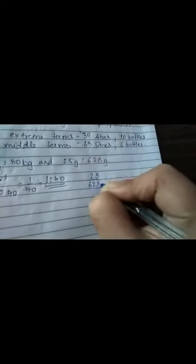C: 2 kg, 80 kg and 25 grams and 625 grams. So again the terms are direct. So we can do it. 2 kg upon 80. Both will go in the table of 2. 2 ones are and 2 forties are. So 1 upon 40. So my ratio is 1 is to 40.